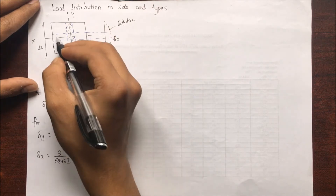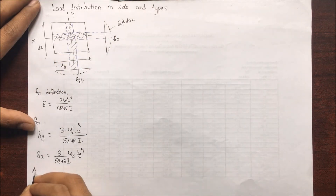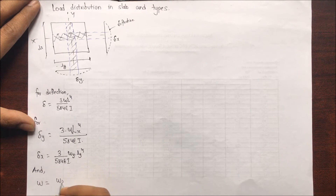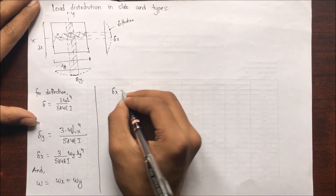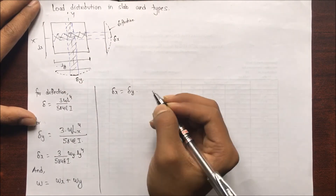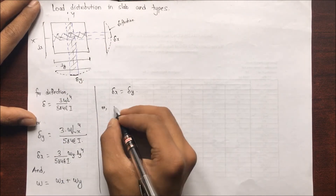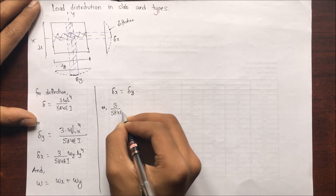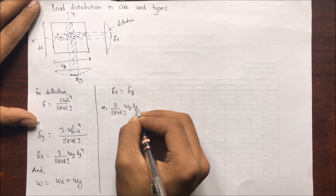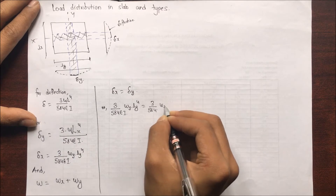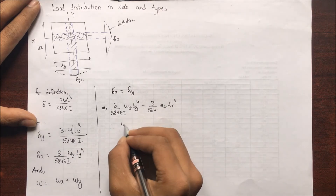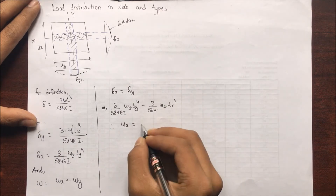The total load w equals wx plus wy. Setting delta x equal to delta y, we get: (3/584) × EI × wy × Ly⁴ = (3/584) × wx × Lx⁴. Taking all terms except wx, we get wx = wy × (Lx⁴ / Ly⁴).